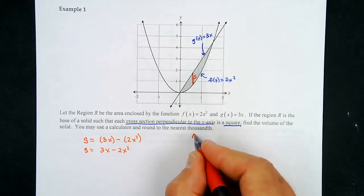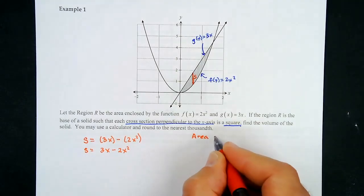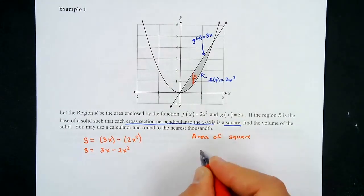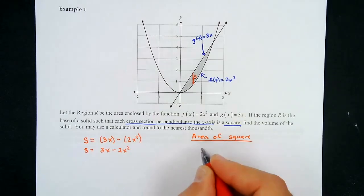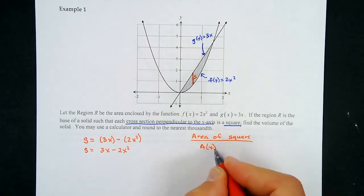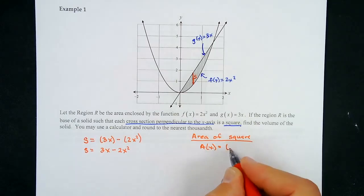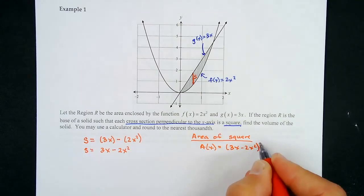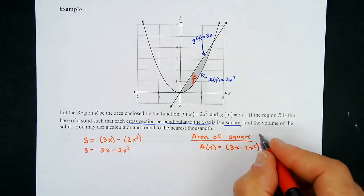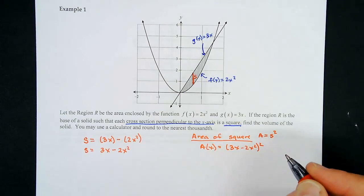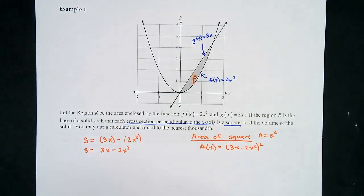Now we find the area of the square. The area formula is A(x) = (3x − 2x²)², because the area of a square is side squared — so we're squaring the side.